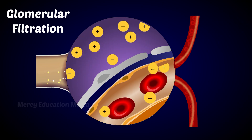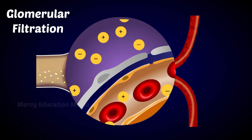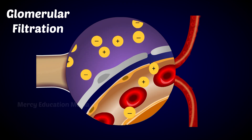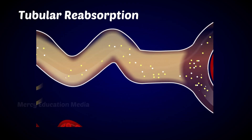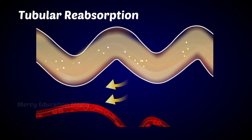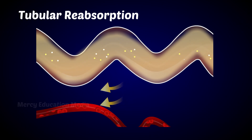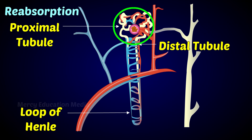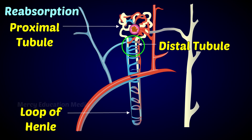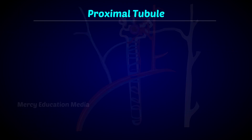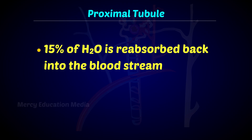The filtrate does not contain proteins or red blood cells, which are too large to pass through capillary membranes. In tubular reabsorption, substances are transported out of the tubules and back into the blood of the peritubular capillaries. Reabsorption takes place in the proximal tubule, the loop of Henle, and the distal tubule.